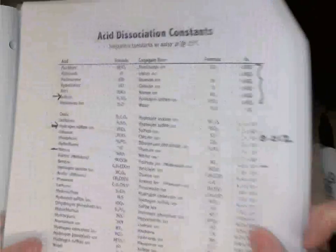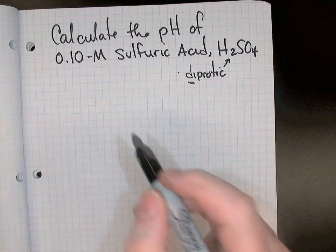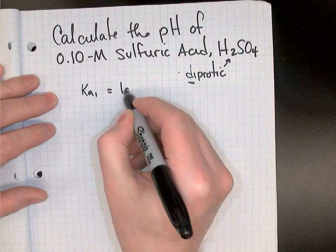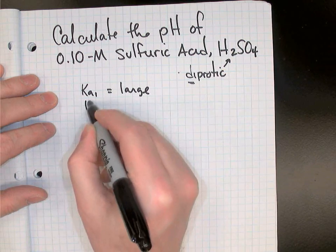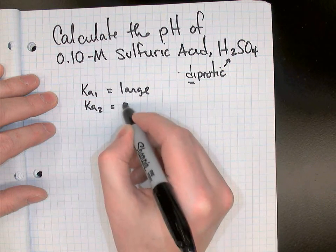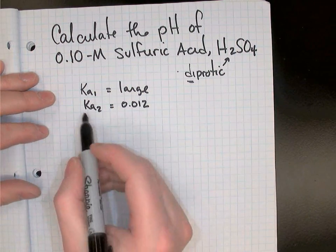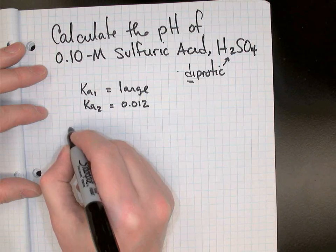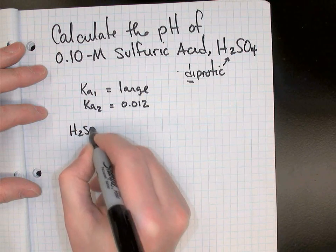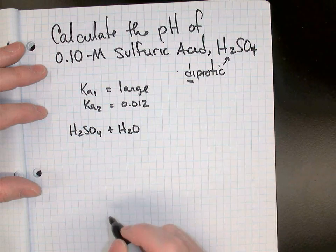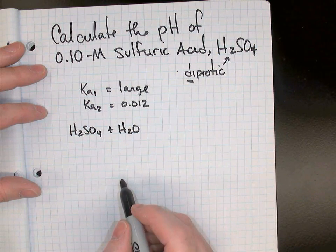Now that we've got the Ka values straight, I'll write them down. Ka1 is large, and Ka2 is 0.012. So let's jump in and do this. The first step, we'll write a balanced equation. H2SO4 reacts with water. You could pause the video at this point and see if you could write the two products it'll form.